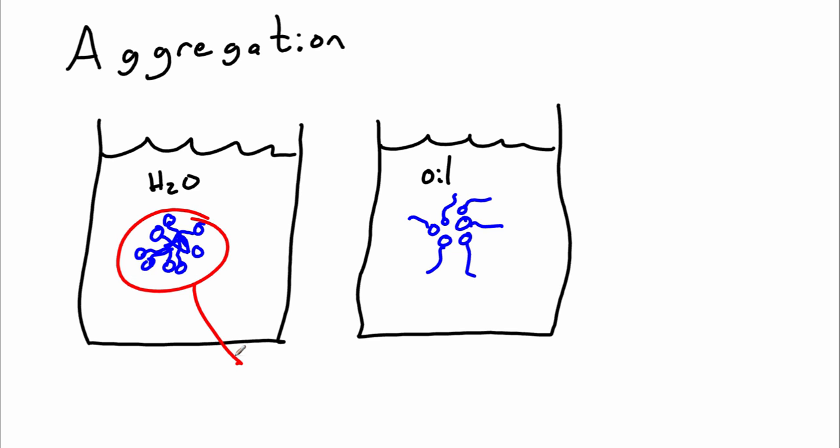What we'll find out is that we can form all sorts of different morphologies of aggregates that depend on the shape of the surfactant and upon the properties of the solvent that we're putting the surfactant in. And indeed, these aggregates can, when they become very concentrated, form a type of liquid crystal called a lyotropic liquid crystal, which will be the subject of another screencast.